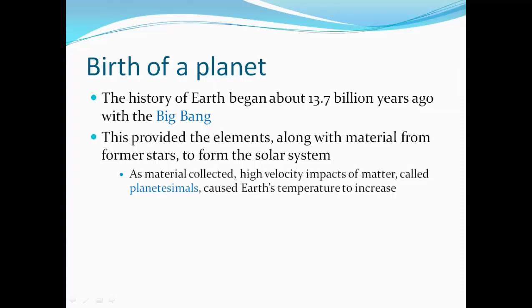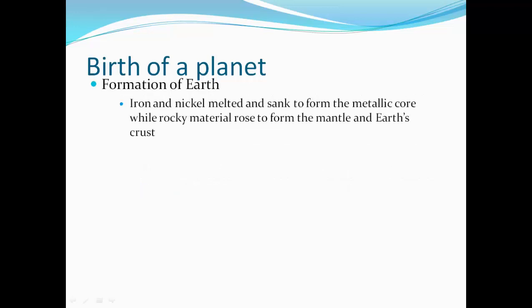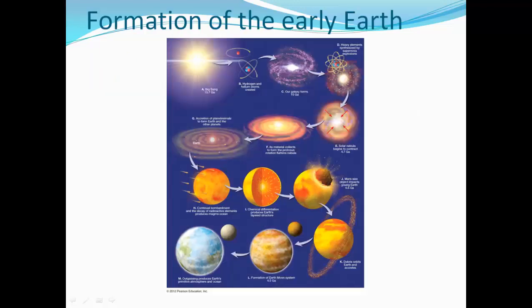The history of the Earth began about 13.7 billion years ago with the Big Bang. This provided the elements along with material from former stars to form the solar system. As material collected, high velocity impacts of matter called planetesimals caused Earth's temperature to increase. Iron and nickel melted and sank to form the metallic core, while rocky material rose to form the mantle and Earth's crust.